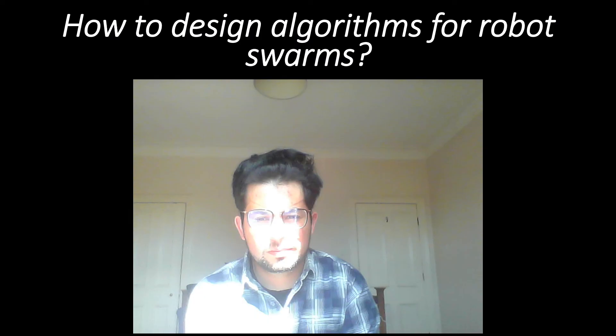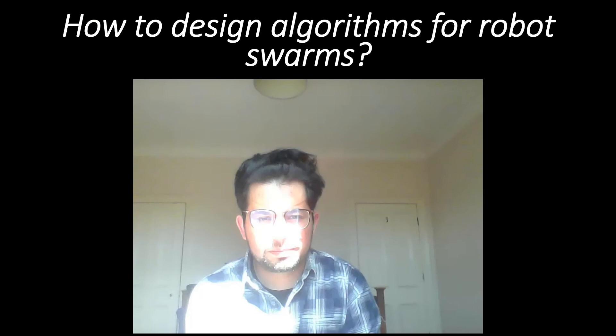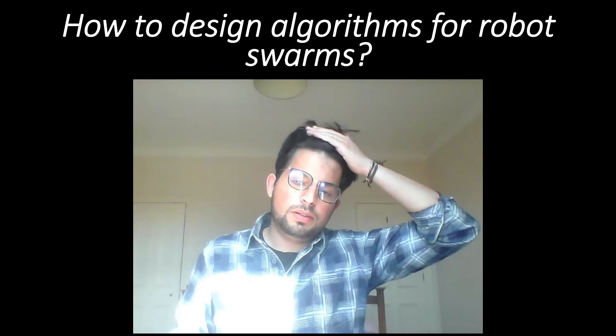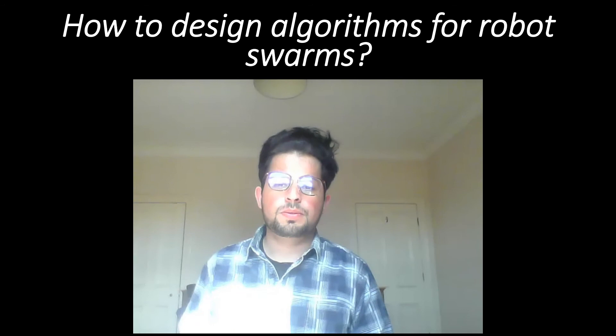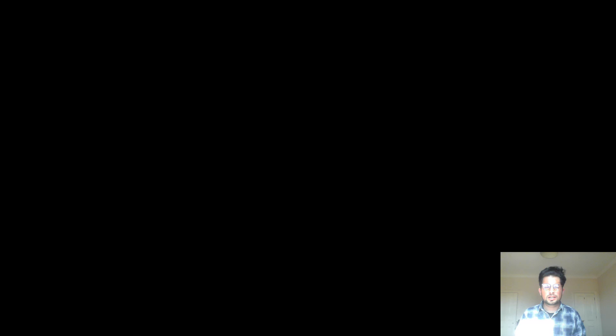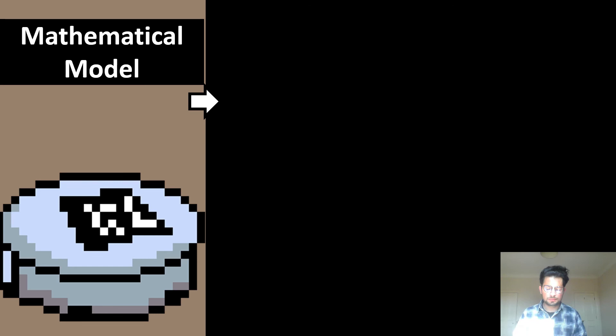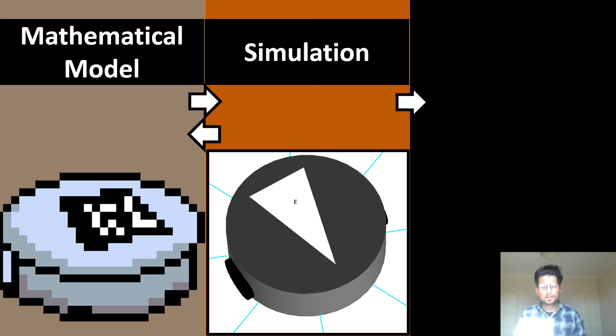I want to finish by briefly talking about the way most people develop their algorithms and run them. Most people first create a mathematical model about the experiment they want to do. If the mathematical model works or exhibits the desired behavior, they test it in simulation. If they get the expected results they move on; if not, they change the mathematical model. If it works in simulation, they run experiments in hardware; if it doesn't work they go back and change things in simulation. This is a classic approach to developing algorithms and addressing the reality gap.